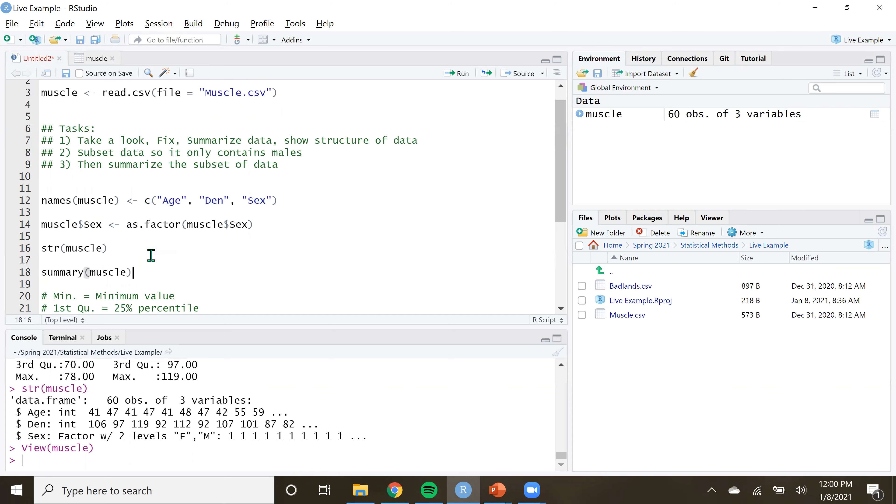Oh man. So that made us $5,000. And what we need to do next is subset the data, right? Because we only care about the males, or at least the scientist from the study only cares about males in this study. For some reason they recorded both males and females, but they only want the males. They only want to analyze the males.